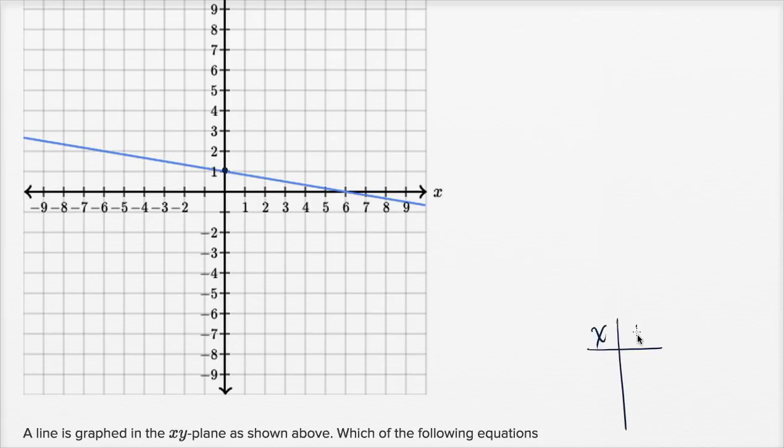So we see that when x is zero, y is one. So that is the y-intercept we could say. And then we could see when x is six, y is zero. When x is six, y is zero.